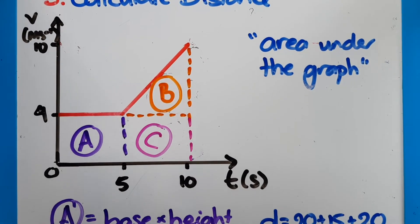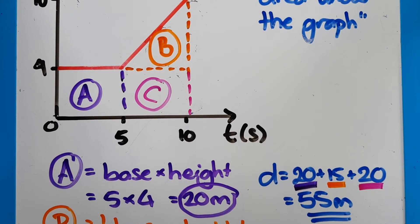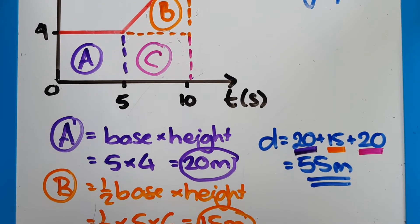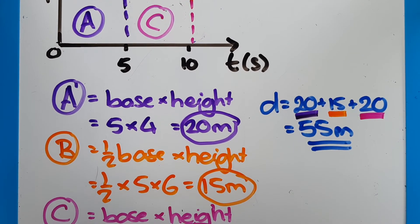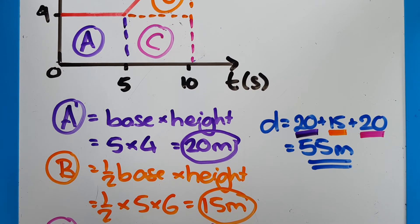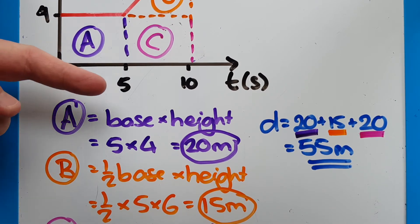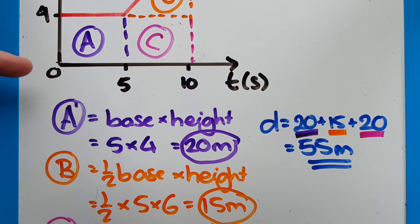So I've broken it up into three sections. So we'll do the best we can to remember what was there. The base of my section A, my first rectangle, is five, from zero to five. And my height is from zero to four, so it's four. So the distance traveled in that first section is 20 meters.